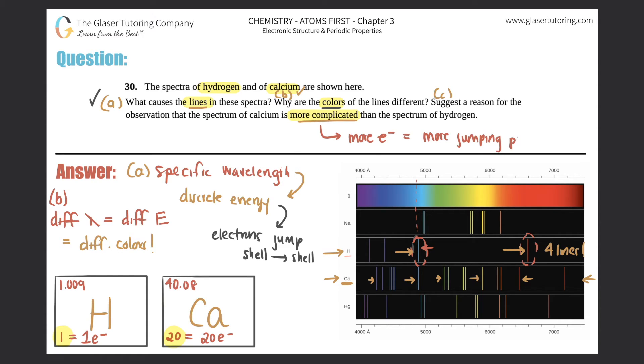So why is calcium more complicated? Because it has more electrons. And with more electrons, that just means more jumping possibilities from shell to shell. More jumping possibilities means more energy differences, more possibilities, different wavelengths, all because it's stemming from more electrons that can possibly jump from shell to shell. And that's why it's more complicated. This is how you read the line spectrum of visible light.